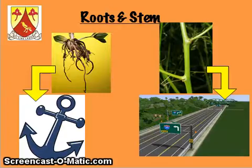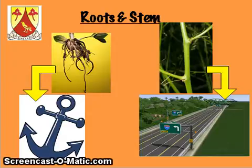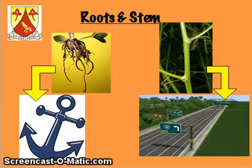First of all, we're going to be looking at the roots and the stem. In each little section that I go through now, I'm going to give you the reason why the roots and the stem, for instance, are important, but I'm also going to give you a little clue so that when you're sitting in the exam and your teacher says, please label this picture of a plant and explain to me why the stem is important, you'll have that little clue picture in your head to spark the definition.